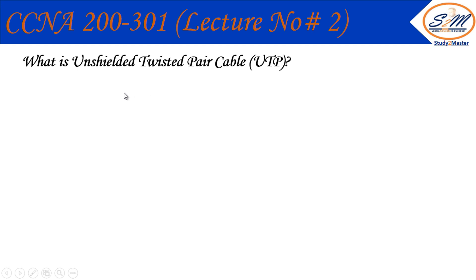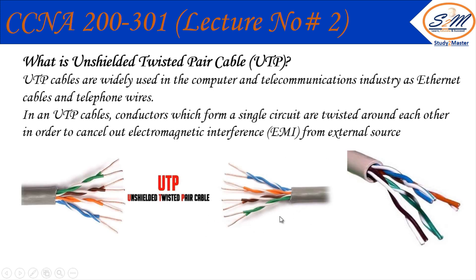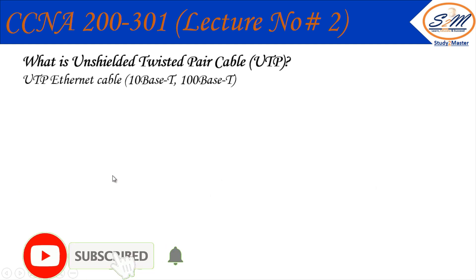UTP stands for Unshielded Twisted Pair. It is a type of Ethernet cable widely used in computers and the telecommunications industry as Ethernet cable and telephone wiring. In a UTP cable, conductor pairs forming single circuits are twisted around each other to cancel out electromagnetic interference (EMI) from external sources. We have two cable types: UTP and STP. The difference between UTP and STP is just an extra foil shield to protect the cable. Both UTP and STP have four pairs with eight wires.